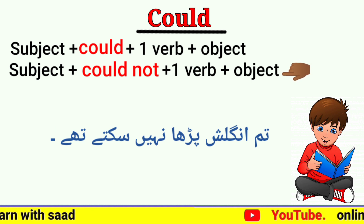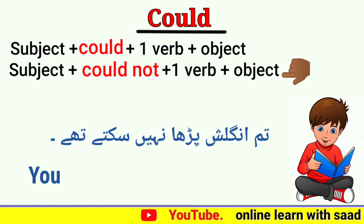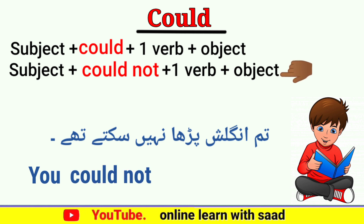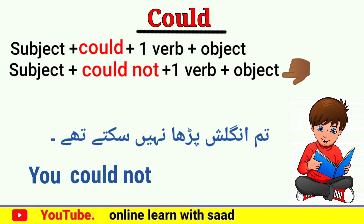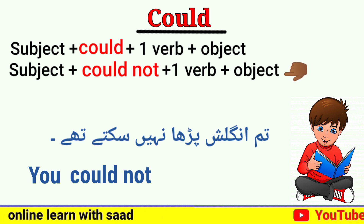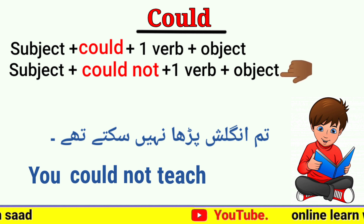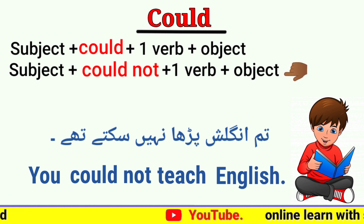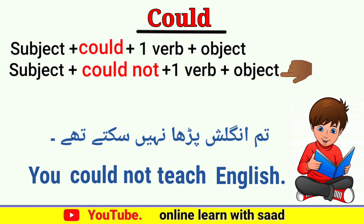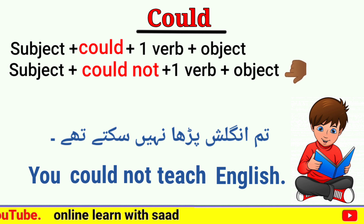'تم انگلش پڑھا نہیں سکتی تھی' — subject 'تم' یعنی you، پھر could not، پھر verb 'پڑھانا' یعنی teach، پھر object 'انگلش' — You could not teach English۔